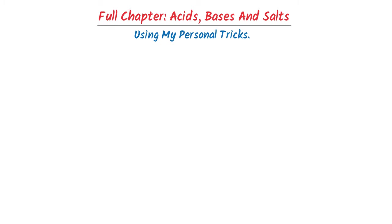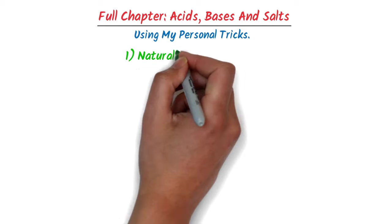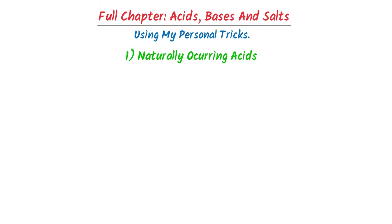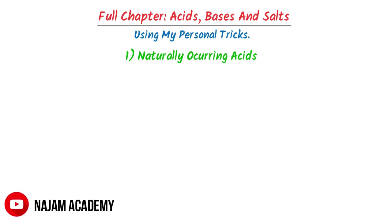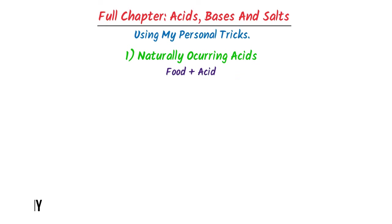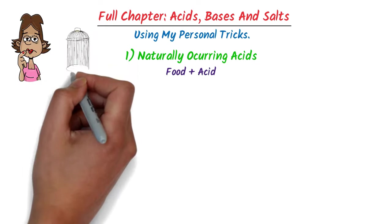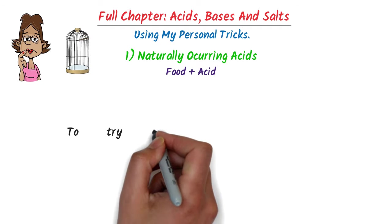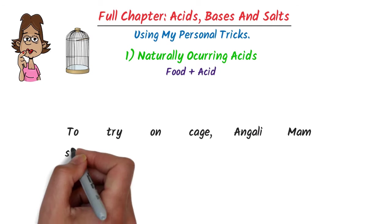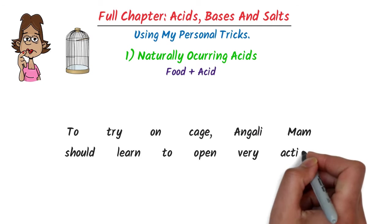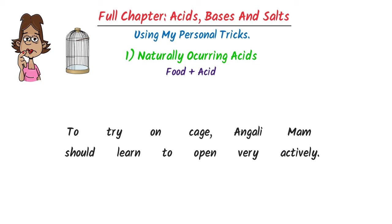The first topic is naturally occurring acids. To learn all the naturally occurring acids, I always write 'food plus acids.' Then I teach the personal trick: 'Try on cage' — Angeli Mame should learn to open very actively.